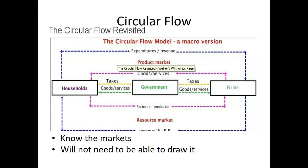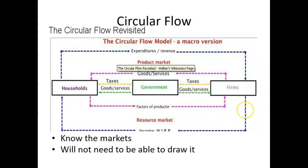Next is the circular flow. You need to know what the flows are. We have households on one side and businesses on the other. Occasionally you can have government in the middle. You have the product market, where goods and services are sold from firms to households. And you have the resource or factor market, where the factors of production — land, labor, capital, and entrepreneurial abilities — are sold to the firm. In exchange, you get the money, the income, that dollar value.